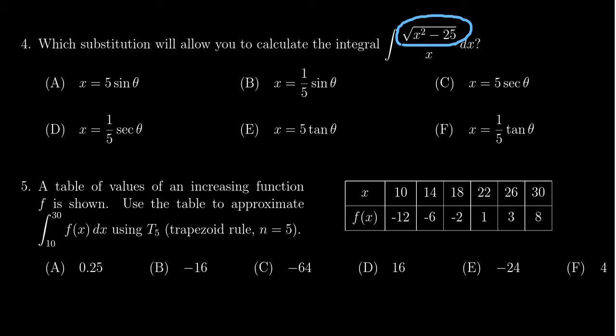I see it's a difference of squares where the variable x² comes first and then the constant 25 shows up second. Since it's a function squared minus a constant squared, this indicates a secant substitution.